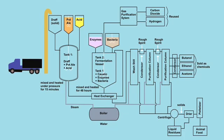The draf and pot ale are prepared for fermentation by mixing them together with an acid and heating with steam to 120 degrees in a pressurized container. This aggressive process breaks down the draf.